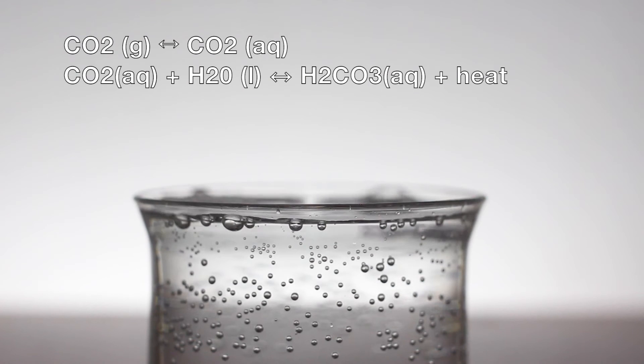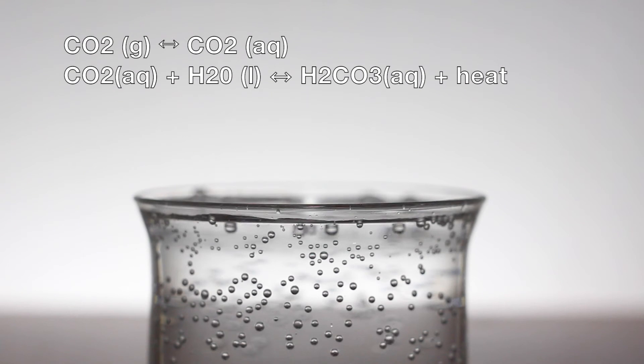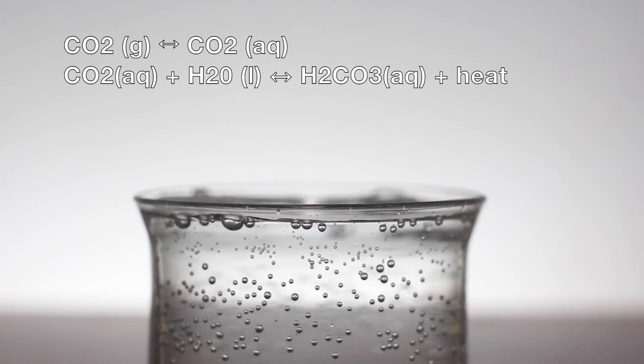When a bottle of soft drink is opened, the pressure of CO2 gas decreases and the equilibrium adjusts by favoring the reaction direction that increases the pressure of CO2. As a result, bubbles of CO2 gas can be seen coming out of the solution.